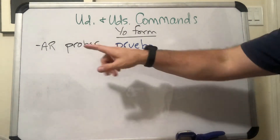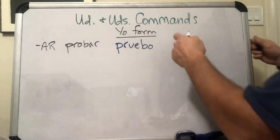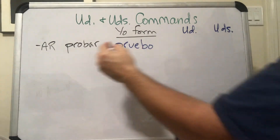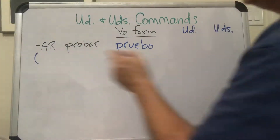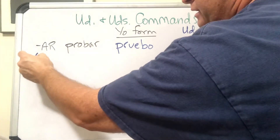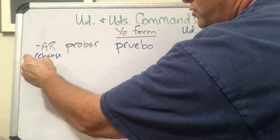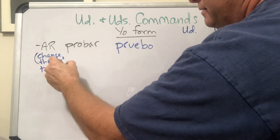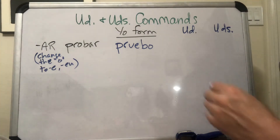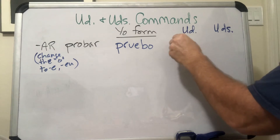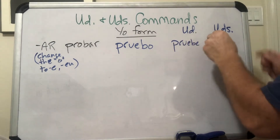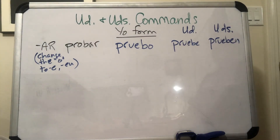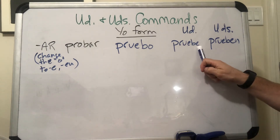There are irregulars, of course, but for all the ones we're going over, you go to the yo form and then change it. So for the usted form of AR verbs, we're going to change the O in the yo form to an E. So you have 'pruebo,' and then the usted form is 'pruebe,' and the ustedes form is 'prueben.'